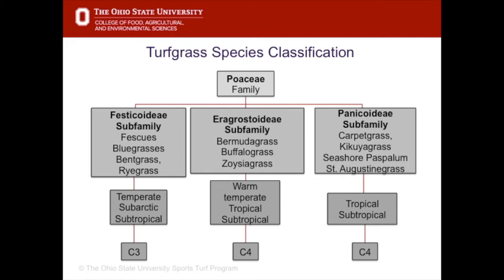The cool season grasses are in the Festucoideae subfamily and these include fescues, bluegrasses, bentgrasses, and ryegrasses. They are adapted to the temperate regions of the world and we refer to them as C3 grasses.